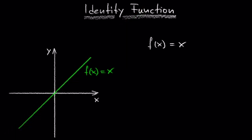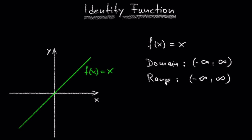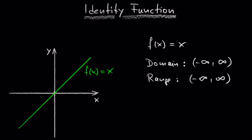The domain and range of the identity function f equals x is simple. There is no restriction on x. Both the domain and range are the set of all real numbers. The domain goes from negative infinity to positive infinity, and the range also goes from negative infinity to positive infinity.